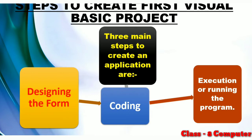Now let's look at the important steps to create a first Visual Basic project. If we talk about creating an application or program in Visual Basic, there are three main steps. The first step is designing the form — deciding what controls are needed. Once designing is complete, we move to coding, which means writing the commands for the program. Once coding is complete, we execute or run the program to display the output. These are the three main steps for a Visual Basic project.